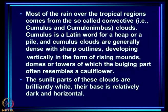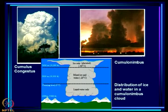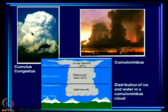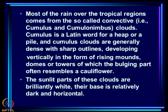Most of the rain over the tropical regions comes from the so-called convective clouds, that is cumulus and cumulonimbus clouds. Cumulus is a Latin word for a heap or a pile, and cumulus clouds are generally dense with sharp outlines developing vertically in the form of rising mounds. We have all seen cumulus clouds — domes or towers of which the bulging part often resembles a cauliflower. The sunlit parts of these clouds are brilliantly white. This is a cumulus congestus cloud, and you can see that it does look like a cauliflower.